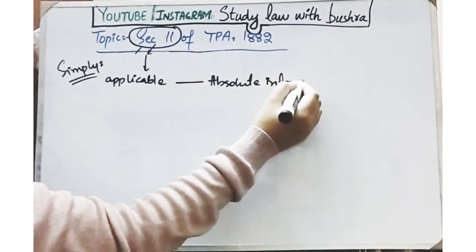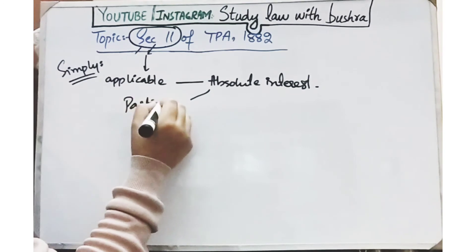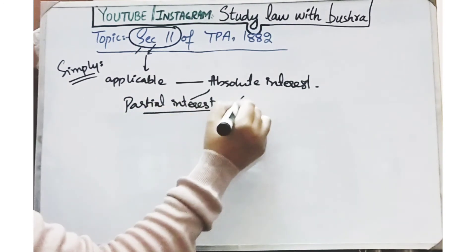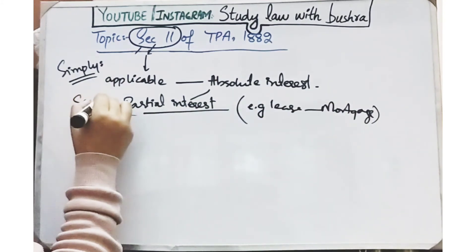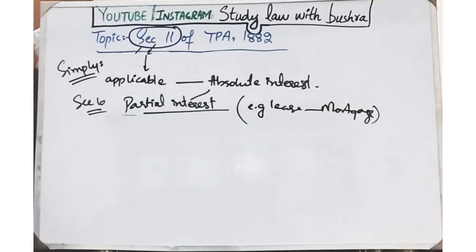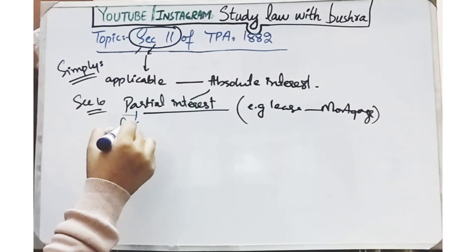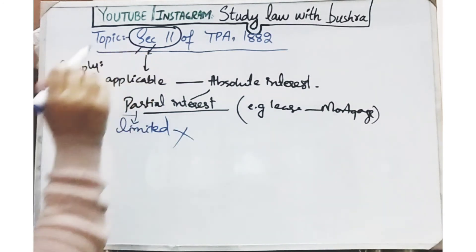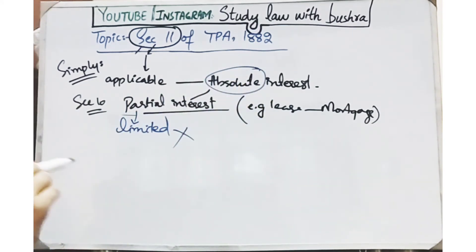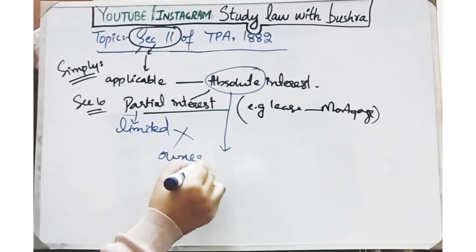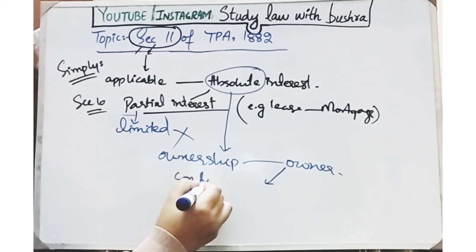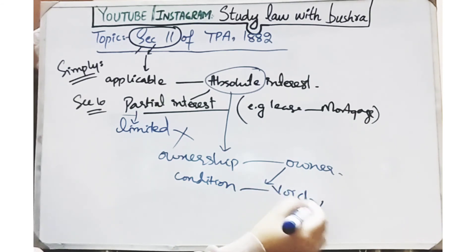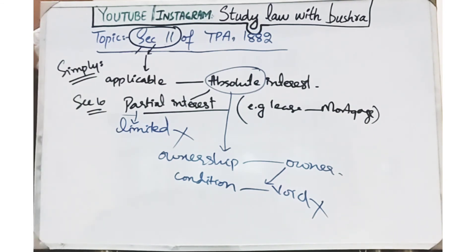In cases where partial interest is transferred, Section 11 is not applicable. Partial interest includes cases like lease or mortgage. Where partial interest is transferred, Section 10 is applicable. Partial interest means you are transferring only limited interest — just the possession, not the ownership. In absolute interest, you transfer both possession and ownership. Once ownership is transferred, the transferee becomes the owner, and you are not entitled to impose any such condition. If you do impose it, such condition will be considered void.